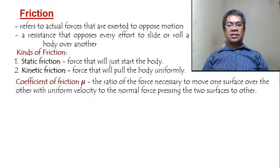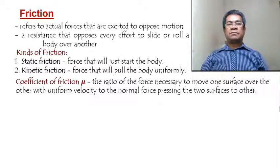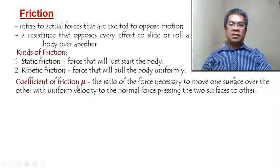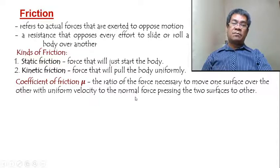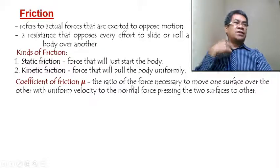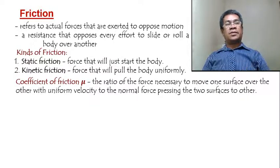Glass is smooth, so it has a lesser amount of friction. The smoother the surface, the smaller the coefficient of friction. Take note that the coefficient of friction is always less than one, because the frictional force is always less than the normal force.